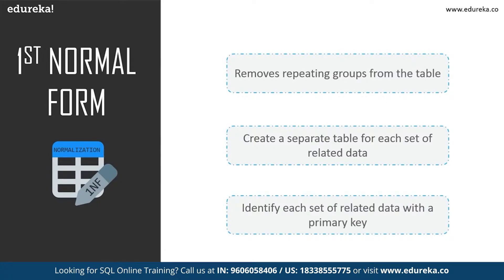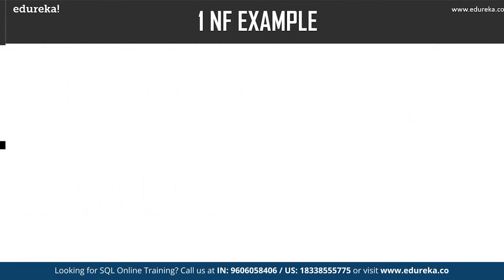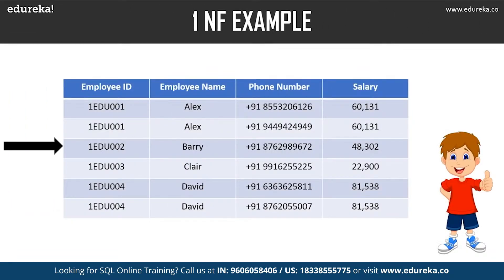In First Normal Form, the following functions are performed: it removes repeating groups from the table, creates a separate table for each set of related data, and identifies each set of related data with a primary key. In the employee table, we have employee ID, employee name, phone number, and salary as columns. We can clearly see the phone number column has two values, which violates the First Normal Form. Applying First Normal Form, each and every row is distinct — no cell has multiple values — and the table achieves atomicity.